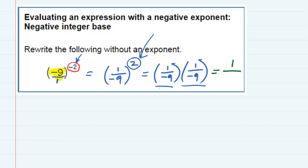The 9 times the 9 gives me an 81, but when I multiply two negatives I do get a positive, so that would give me a positive 81. So evaluating our original expression, I now have 1 over 81.